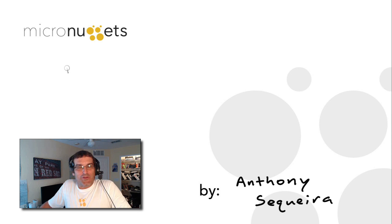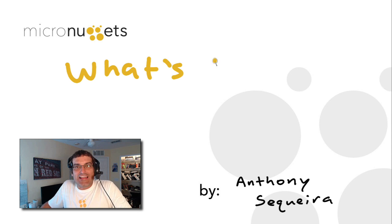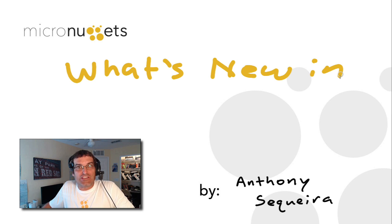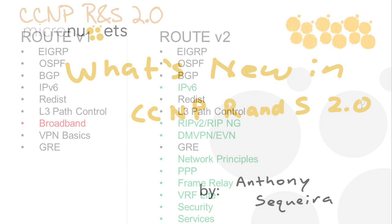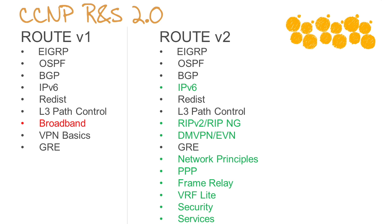Hi, Anthony Sequeira here with CBT Nuggets. In this micro nugget, let's take a quick look at what has changed in the new CCNP version 2.0 for Route Switch from Cisco Systems. As you're probably aware, the CCNP Routing and Switching Professional Certification deals with three main exams and courses.